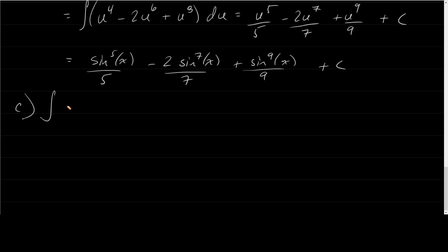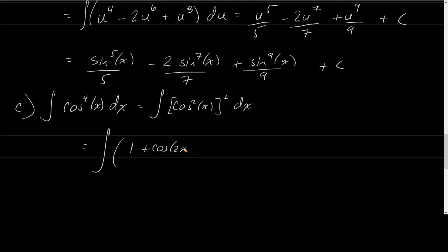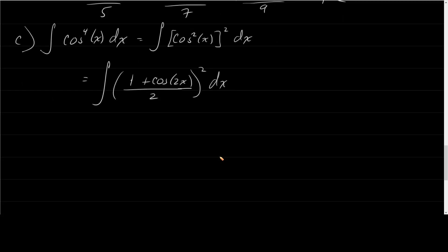Example c: the integral of cosine to the fourth of x dx. There is no power of sine, but we can think of it as sine to the zero — and zero is even. So both powers are even, and we must use the power reduction formula. We rewrite this as the integral of (cosine squared of x) squared dx, and apply the formula: integral of ((1 plus cosine 2x) over 2) squared dx.